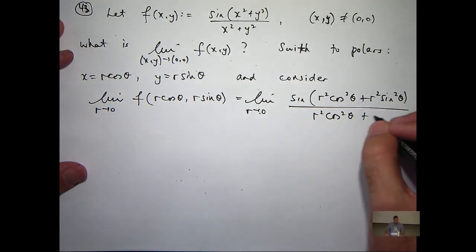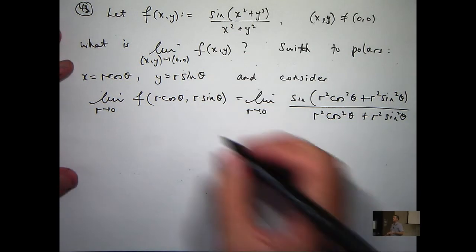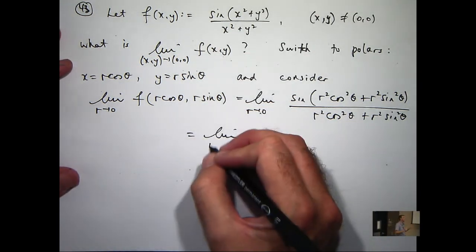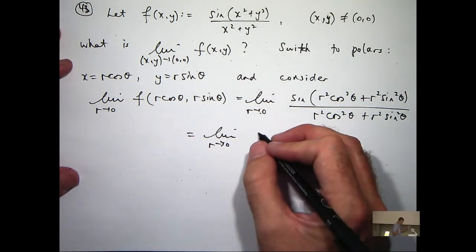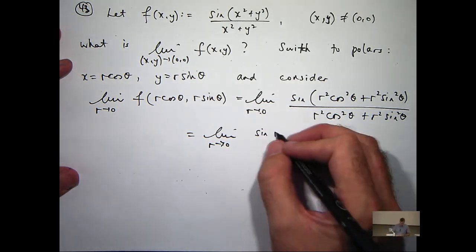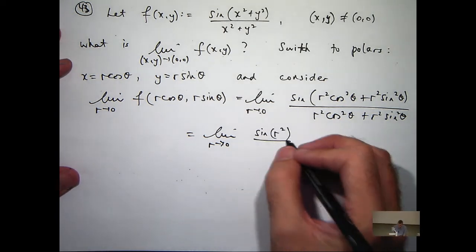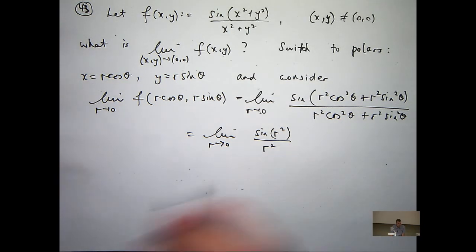So at the top I'm going to get sin(r²), and on the bottom I'm going to get r². Now what is that limit?